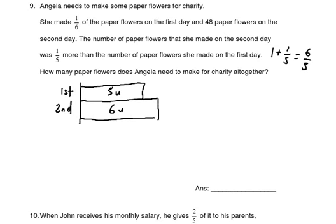She made one-sixth of the paper flowers on the first day and 48 on the second day. The second day is six units, so six units equals 48. Therefore one unit equals 48 divided by six, which is eight. Knowing one unit equals eight, I can find the number of paper flowers made on the first day.